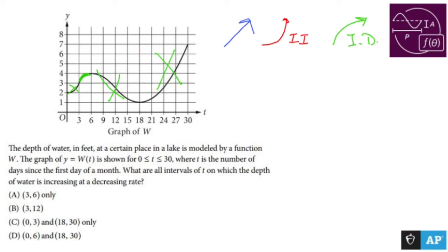So the area that we want, the only spot that we want, is this concave down but increasing spot right here, which is between three and six.